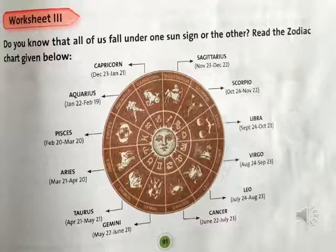Sagittarius: November 23 to December 22. Scorpio: October 24 to November 22. Libra: September 24 to October 23. Virgo: August 24 to September 23. Leo: July 24 to August 23. Cancer: June 22 to July 23. Gemini: May 22 to June 21. Taurus: April 21 to May 21. Aries: March 21 to April 20. Pisces: February 20 to March 20. Aquarius: January 22 to February 19.